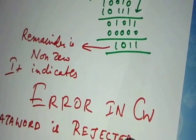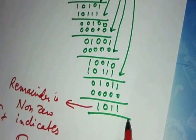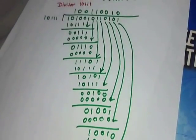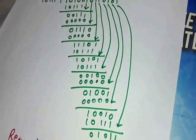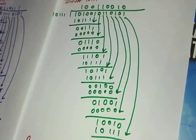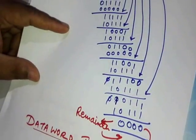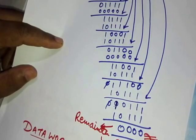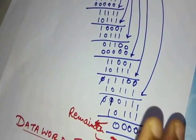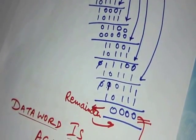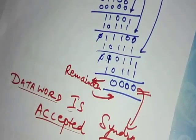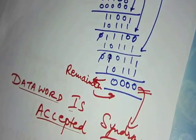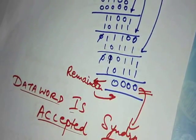So that's all. You can see how CRC is used to find errors. If you change the code word you will get a nonzero remainder, and if you don't change the code word the remainder is zero. This is the way we use CRC to find errors. If you like this video please give your comments, like and share, and do subscribe to my channel. Thank you for watching.